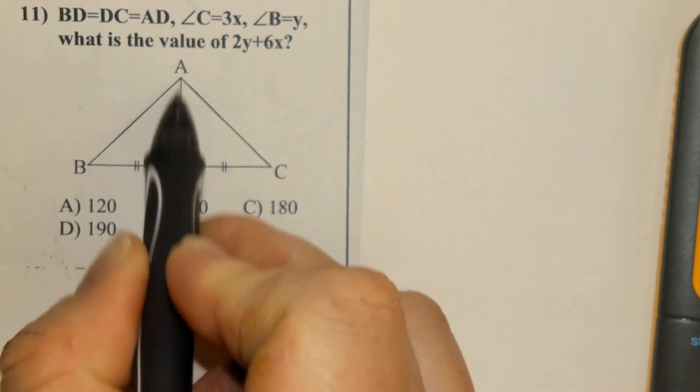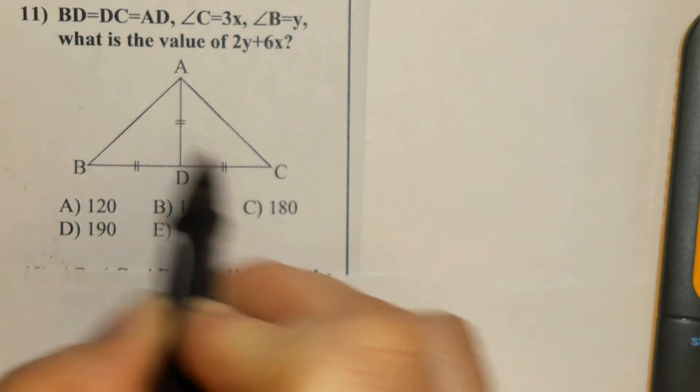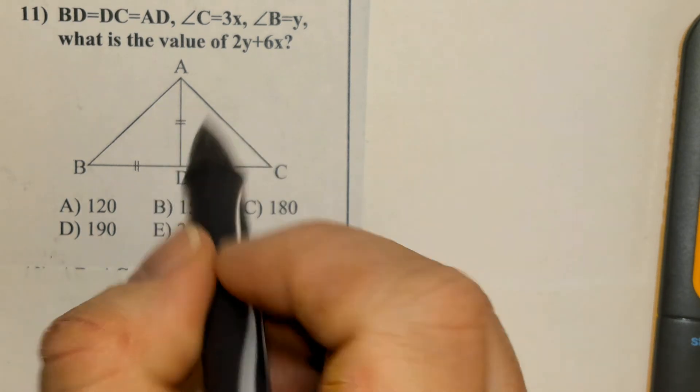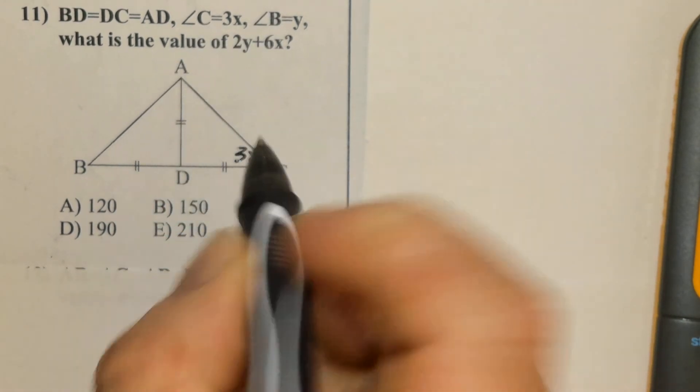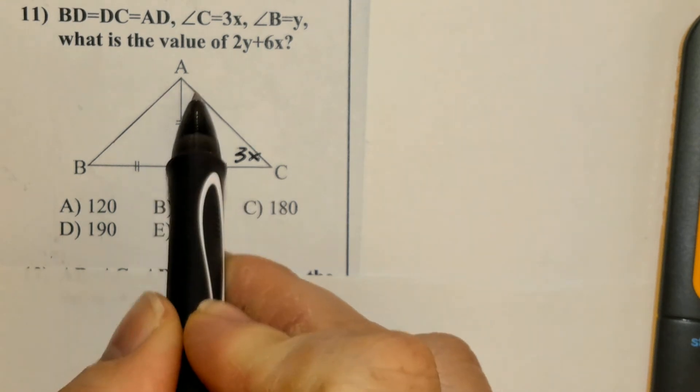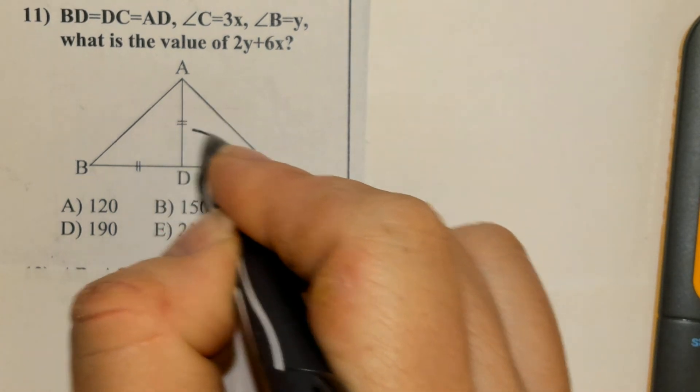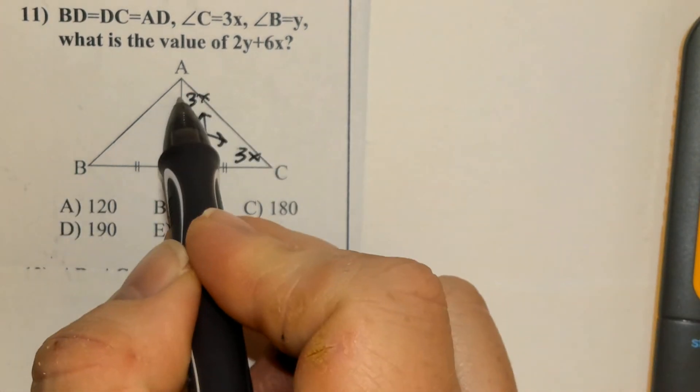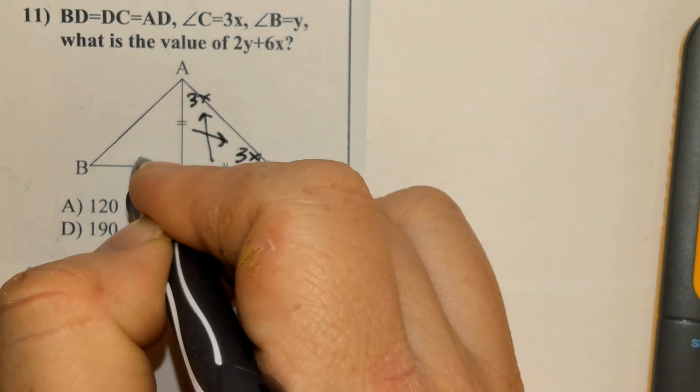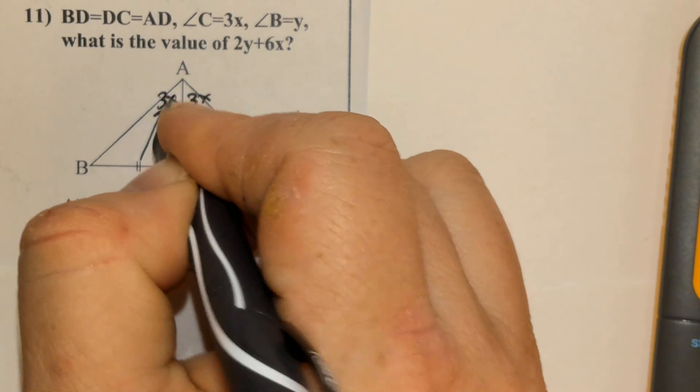It states that these three sides are all equivalent in length. It also states that angle C is 3x. Well, I know if these two sides are equivalent, the angles opposite of them are also equivalent. And again, if these sides are equal, then the opposite of this side is also 3x.